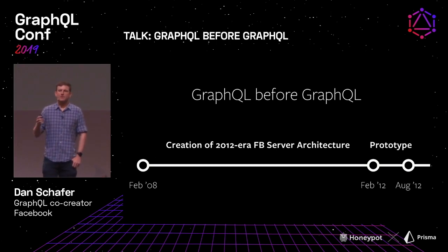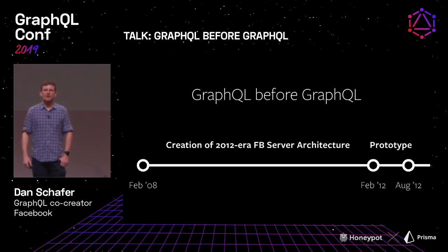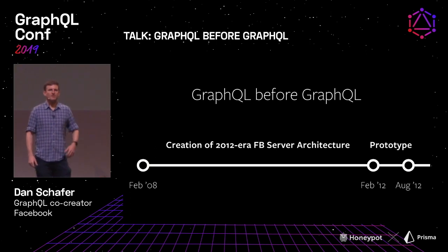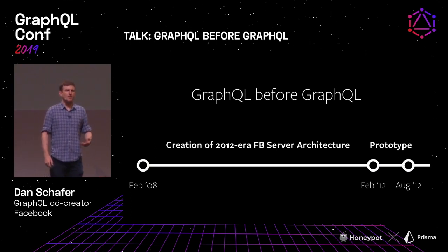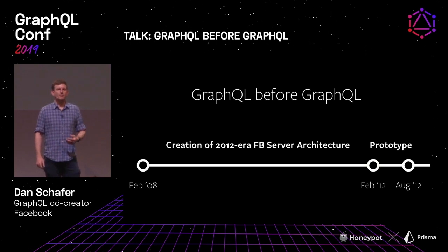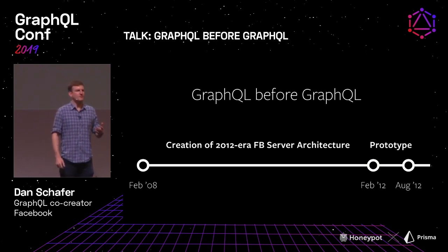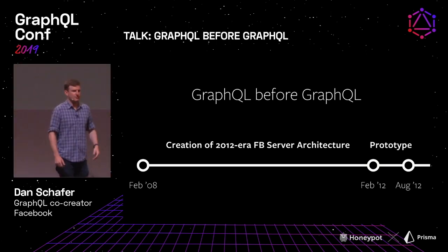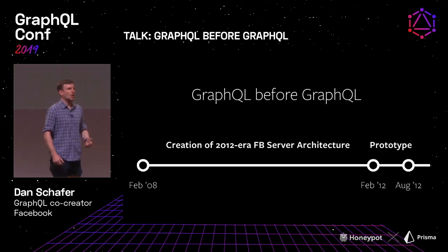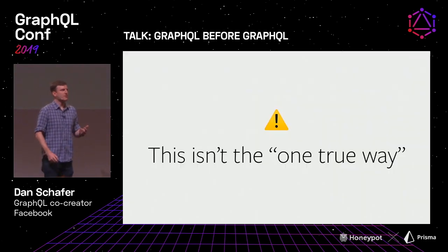It's probably four-plus years leading up to 2012, because a lot of the architectural decisions we made there really made GraphQL possible. And if you look at GraphQL today, you can see the effects of those decisions on the technology and on the way it operates.